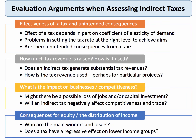Now let's look at the evaluation arguments for indirect taxes. First, you can challenge the effectiveness of a tax and consider unintended consequences. Does the tax actually achieve its objectives — does it change consumer behaviour? That depends on the price elasticity of demand. If elasticity is low, it could take quite a large tax to produce any significant change in quantity consumed. It's also very difficult to set the tax at the right level — think about the 5p plastic bag charge or the sugar tax.